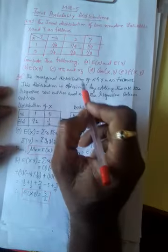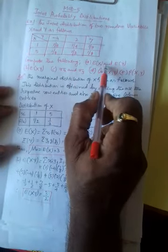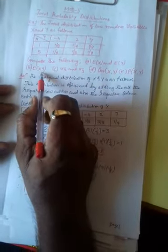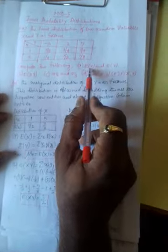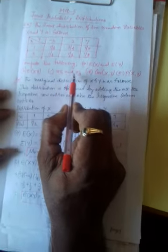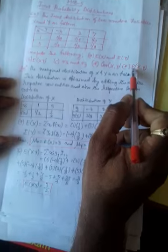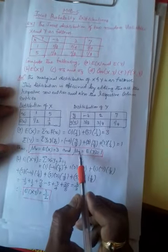Compute the following: E(x) and E(y), E(xy) — E means expectation — sigma x and sigma y, covariance of x and y, and rho of x and y.